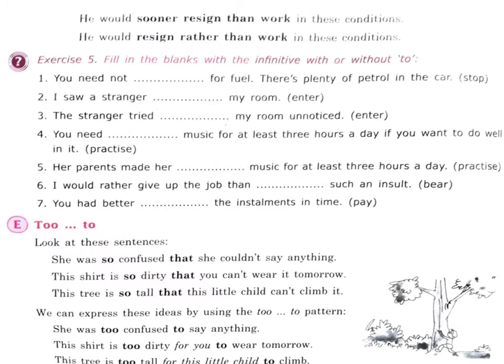This shirt is too dirty for you to wear tomorrow. This tree is too tall for this little child to climb. After the first 'too' there will be a verb, and after the second 'to' there will also be a verb. You need to remember this. The rest of the part will be removed and the sentence will be correct.